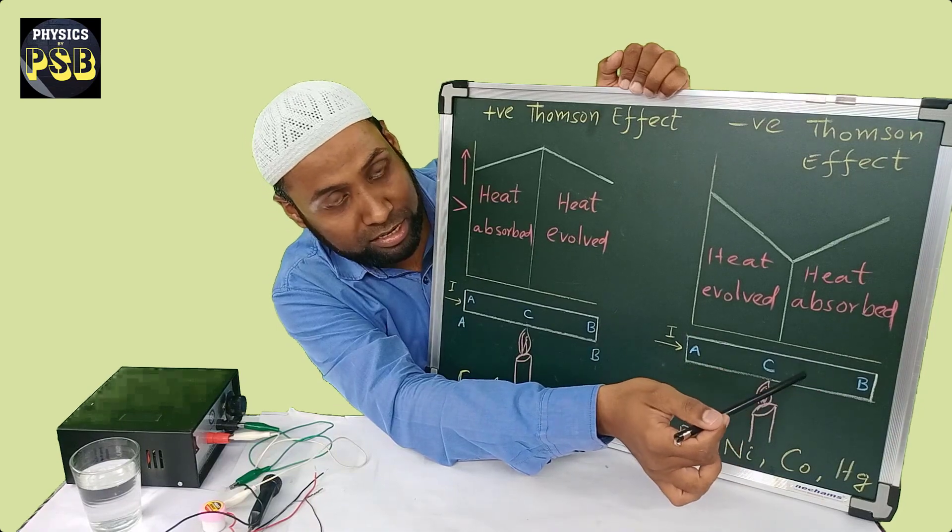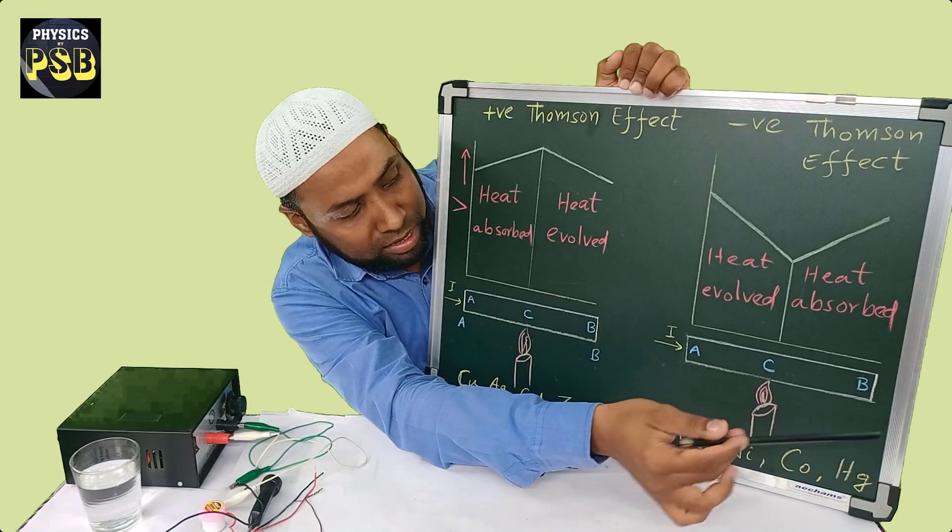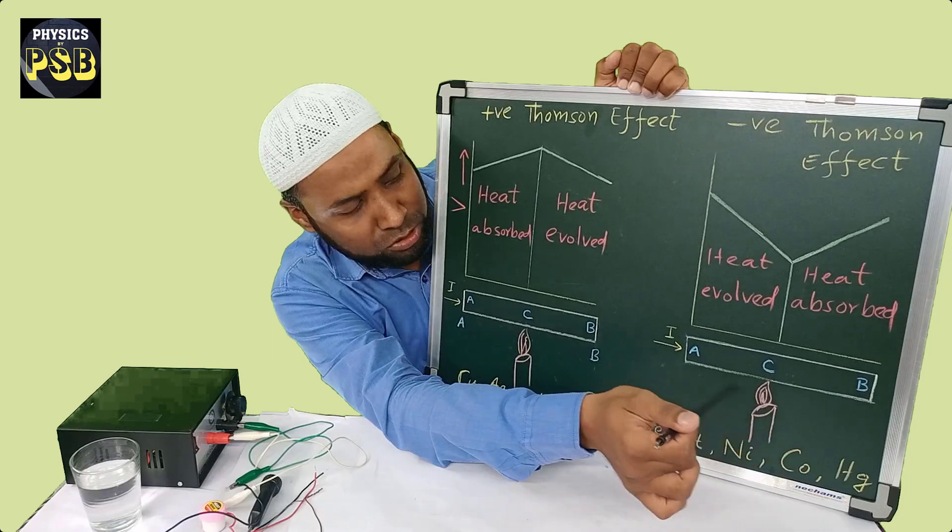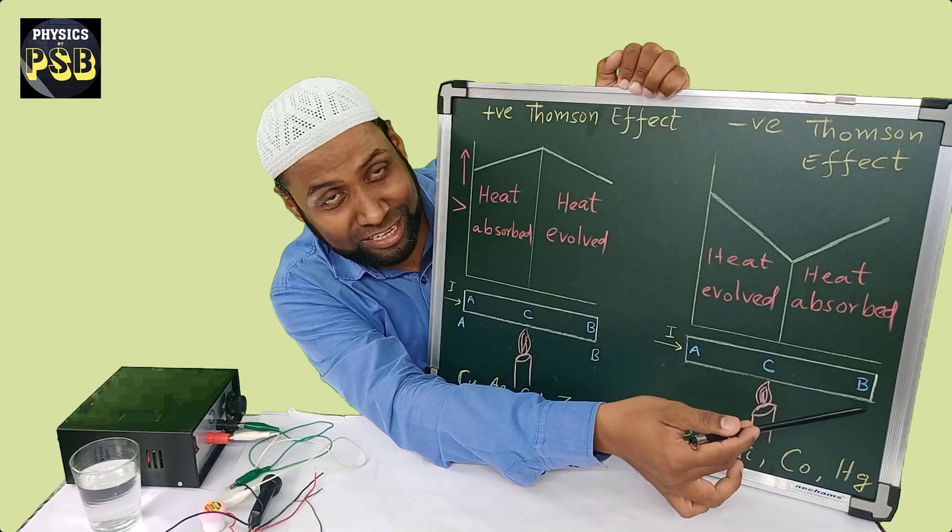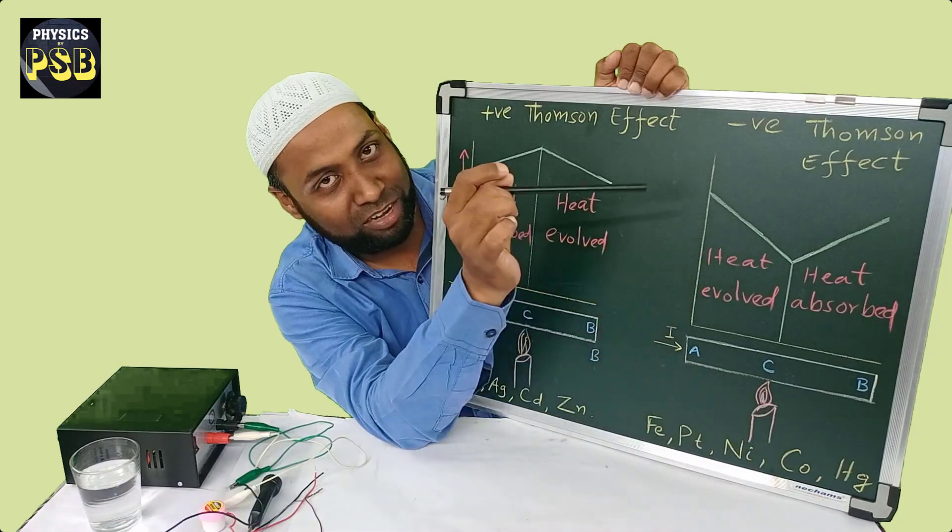So it is a cold region. That means, the temperature is more at this end and at this end temperature is less. So as the current flows, the temperature decreases. We call this effect as negative Thomson effect.